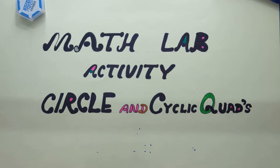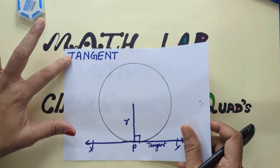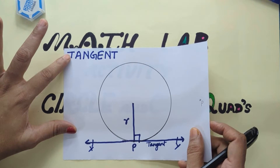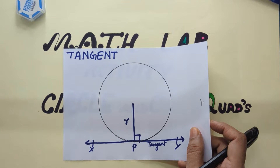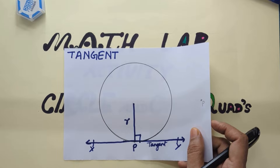Let's begin with the first math lab activity related to circles — it is about tangent to a circle. In this, we will know the meaning of tangent, how many tangents can be drawn to a circle at a point on it, at a point external to it, and the properties related to tangents to a circle through activity.